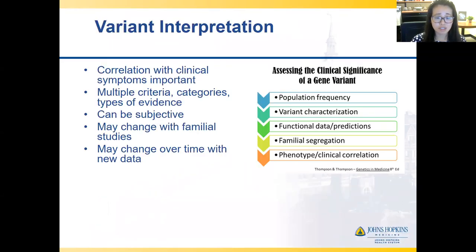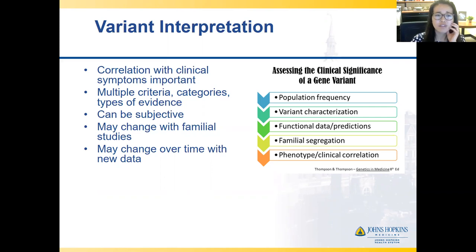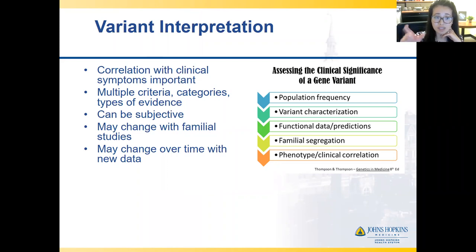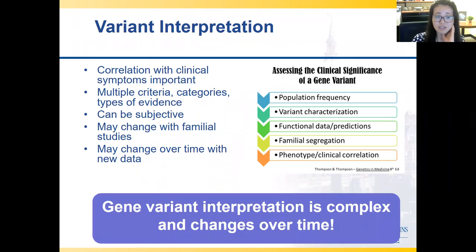Things for you to know as a clinician: the clinical correlation is very important. If there's an uncertain variant but it doesn't fit at all with the patient's phenotype, maybe that's not very relevant. The process is subjective and may change with familial studies — for example, if a child and mother both have seizures but the variant is inherited from an unaffected father, that's probably not the variant you're looking for, and that information may cause it to be downgraded to benign. This classification process changes over time: we get reports back saying your patient's 2016 variant has now been upgraded or downgraded.